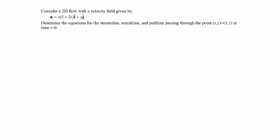Let's start with the streamline. We know that the slope of a streamline is everywhere tangent to the velocity vectors. So dy over dx will equal uy over ux, since they have the same slope. Here uy is equal to y, and ux is equal to x over 1 plus 2t.